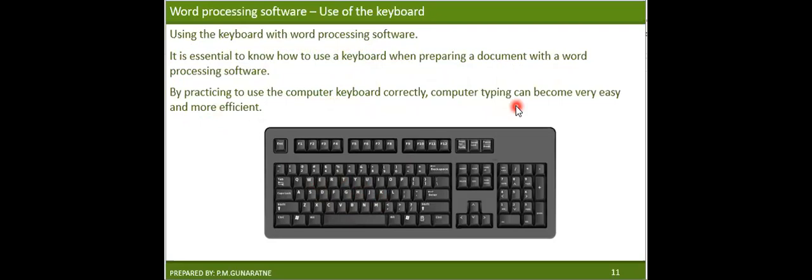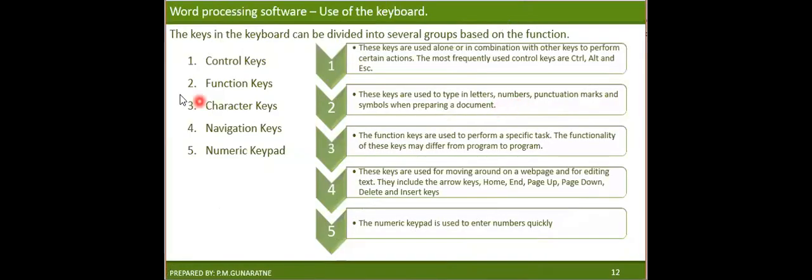You don't need to look at the keyboard if you are good at it — you can look at the screen and type at speed. What most people do incorrectly is look at the keyboard without looking at the screen; that is not a good practice. The types of keys on a keyboard are: control keys, function keys, character keys, navigation keys, and the numeric keypad.